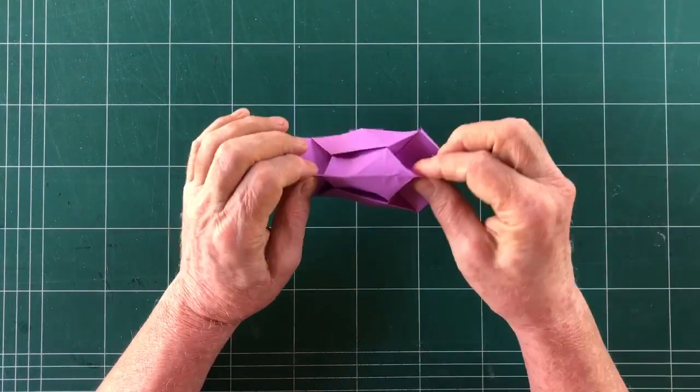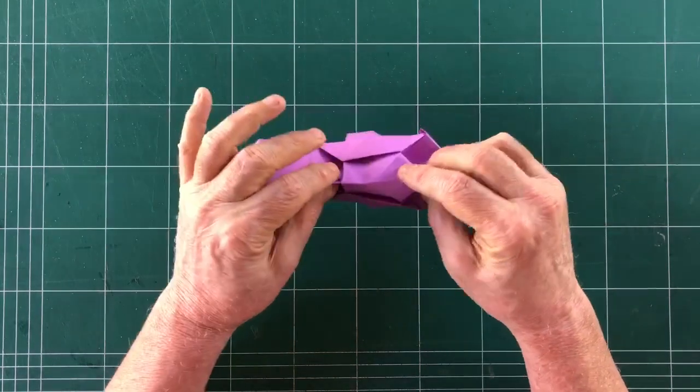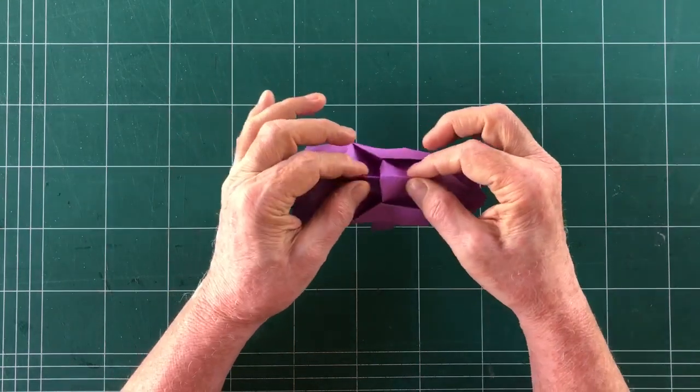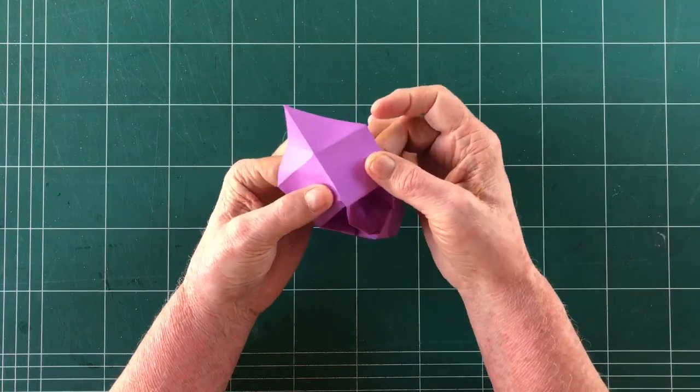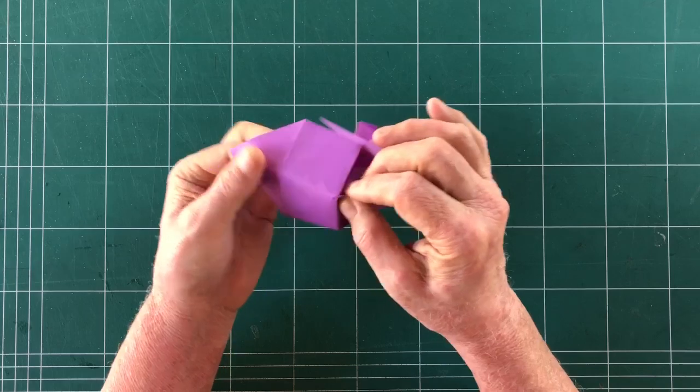And now I can open the other side so hold the belt this time and pull that out and just organise the paper. It tends to be a little messy when you've done that.